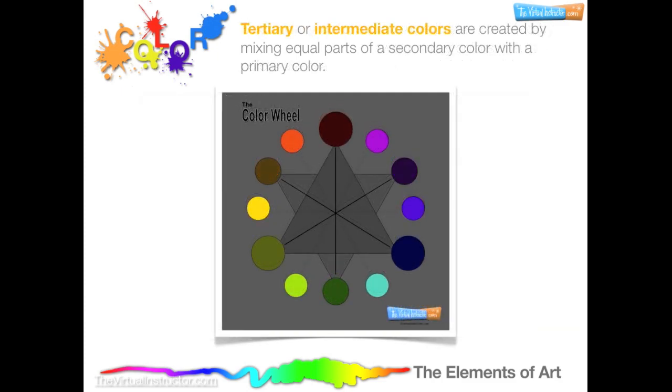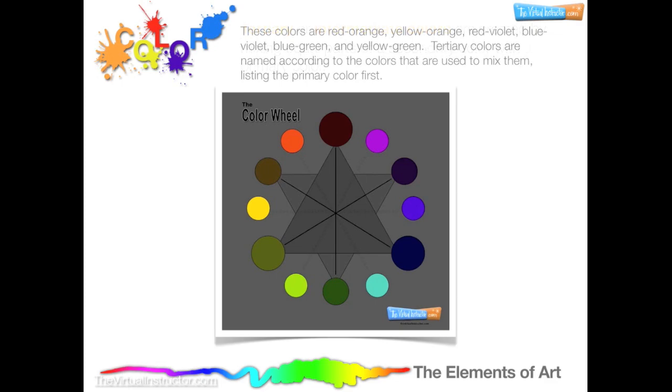Tertiary colors are created by mixing equal parts of a secondary color with a primary color. These colors are red-orange, yellow-orange, red-violet, blue-violet, blue-green, and yellow-green. Tertiary colors are named according to the colors that are used to mix them, listing the primary color first.